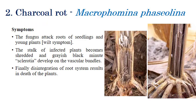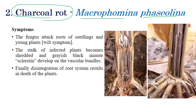Coming to charcoal rot, which is caused by Macrophomina phaseolina. In whatever crop you encounter charcoal rot, it is caused by Macrophomina phaseolina most of the time — about 90% of the time. In rare cases, charcoal rot may be caused by Fusarium or Sclerotium, but most commonly it is Macrophomina phaseolina. On the right side, we can see the fungus mainly affects seedlings and young plants, especially in the root regions.